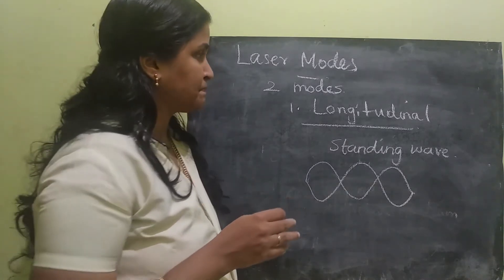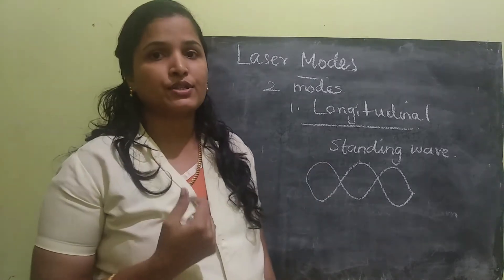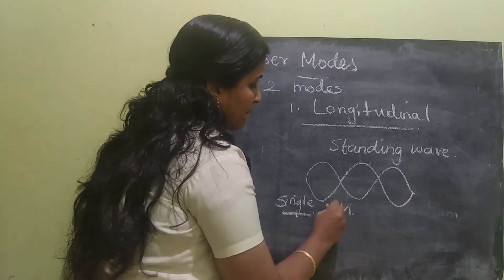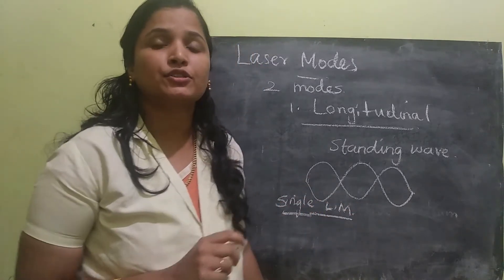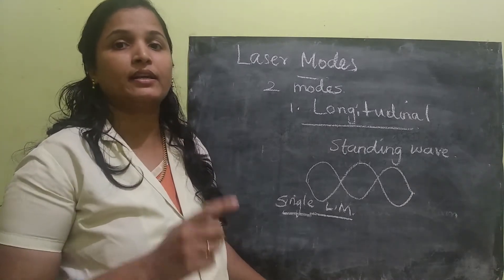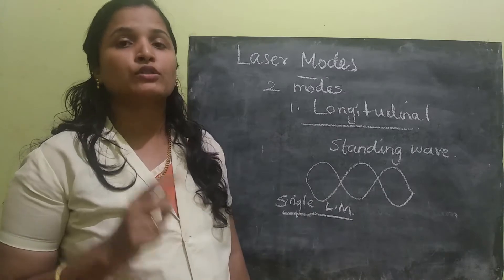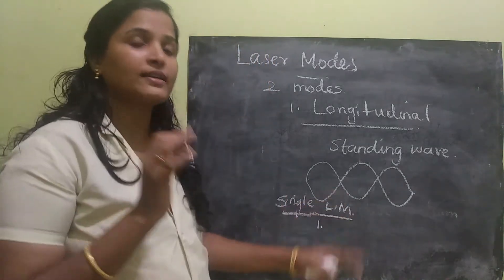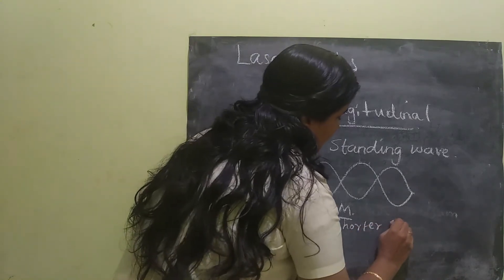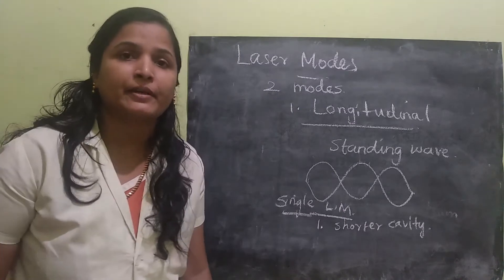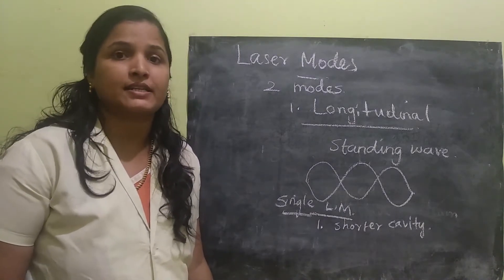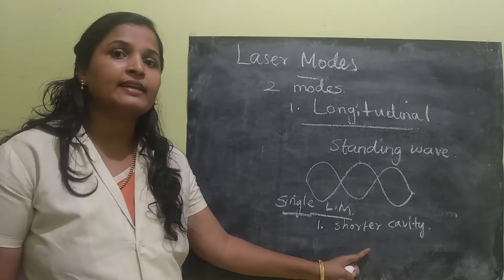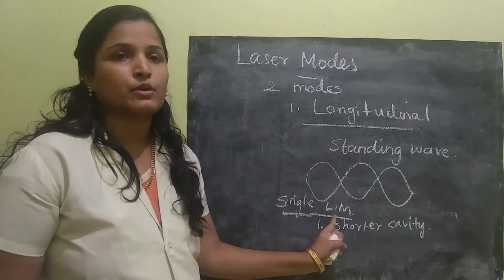We have two modes of achieving single longitudinal mode. Single longitudinal mode means it should operate in a single standing wave pattern. The first method is we use a shorter cavity — less than 10 centimeters. If the laser cavity or laser resonator is very small, then it will have a single longitudinal mode.